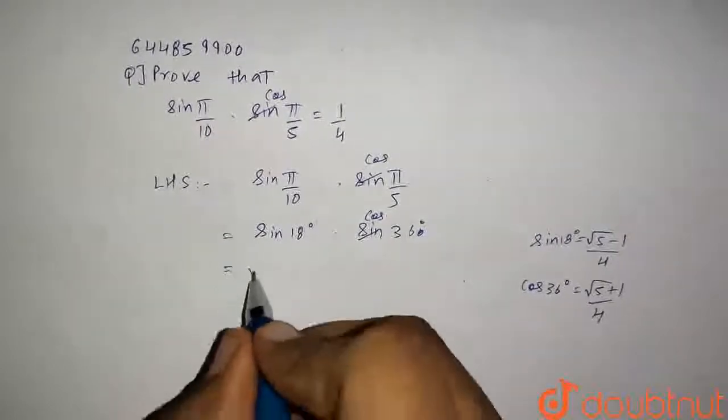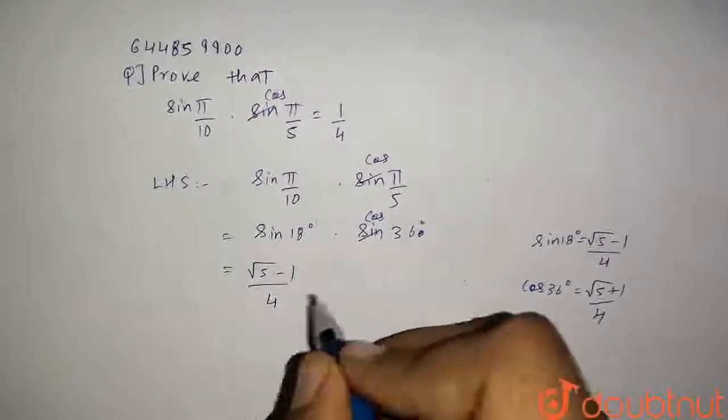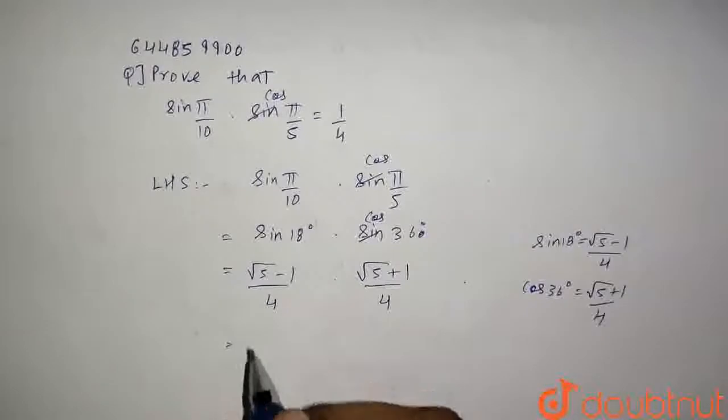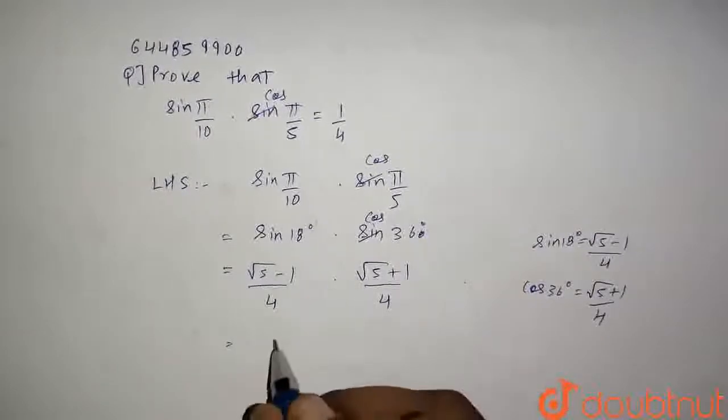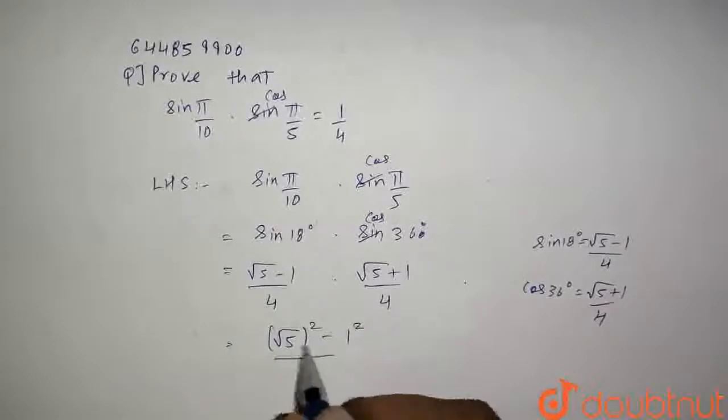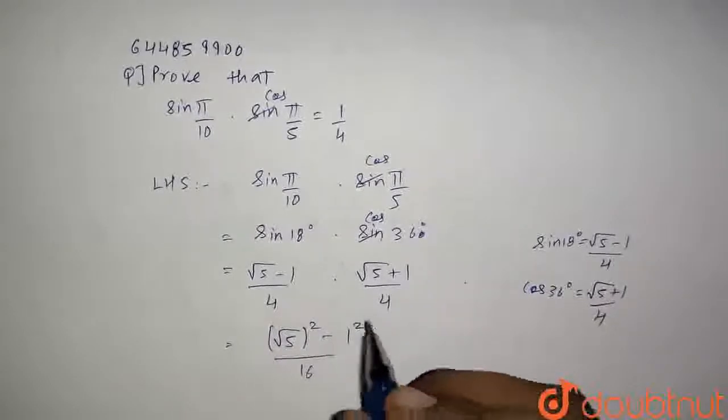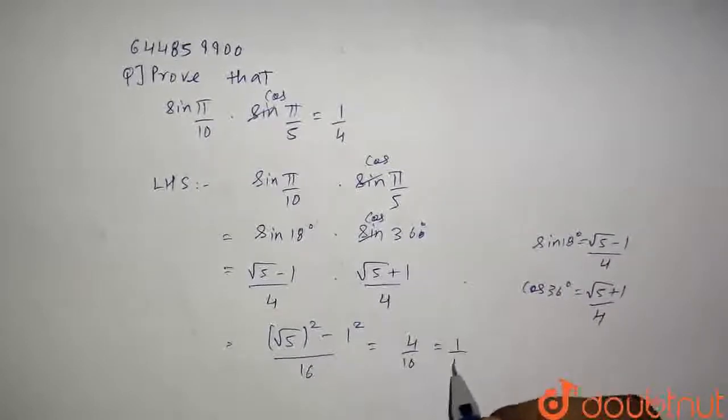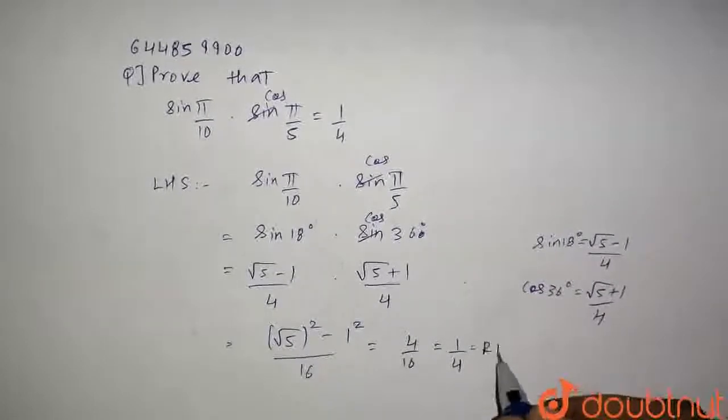So just putting the values: (√5 - 1)/4 × (√5 + 1)/4. The numerator will be (a - b)(a + b) which is a² - b², so (√5)² - 1² = 5 - 1 = 4, and the denominator is 4 × 4 = 16. So it equals 4/16 = 1/4, which equals the RHS.